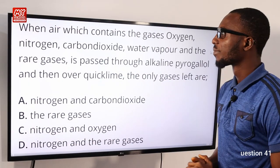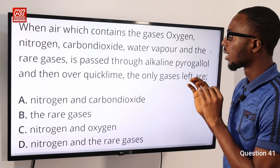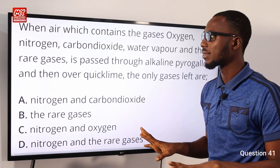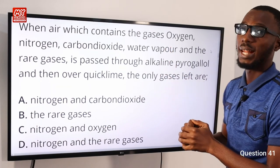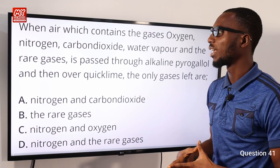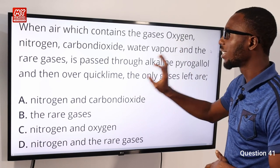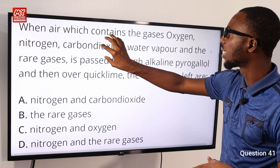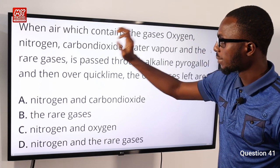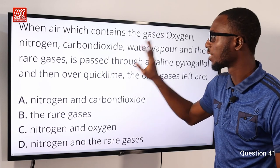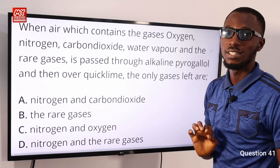Question 41. When air containing oxygen, nitrogen, carbon dioxide, water vapor, and rare gases is passed through alkaline pyrogallol and then over quicklime, what gases remain? Alkaline pyrogallol absorbs oxygen, while quicklime has high affinity for carbon dioxide and water vapor. So oxygen, carbon dioxide, and water vapor are removed. What remains is nitrogen and the rare gases. Option D is correct.